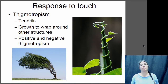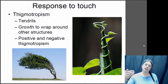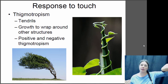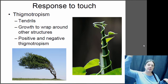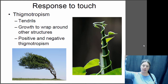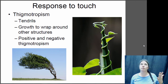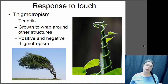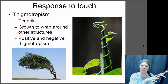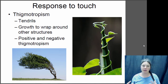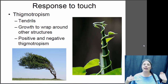Plants can also respond to touch, which is very important for climbing plants. Growth in response to touch is called thigmotropism. Growing towards the thing touching you is positive thigmotropism; growing away is negative thigmotropism. Tendrils of vines will often wrap around something they're touching - positive thigmotropism. Plants exposed to mechanical stress like constant wind often grow away from it, as you can see in this tree that has grown to lean away from the wind, making it more aerodynamic and less susceptible to wind pressure.